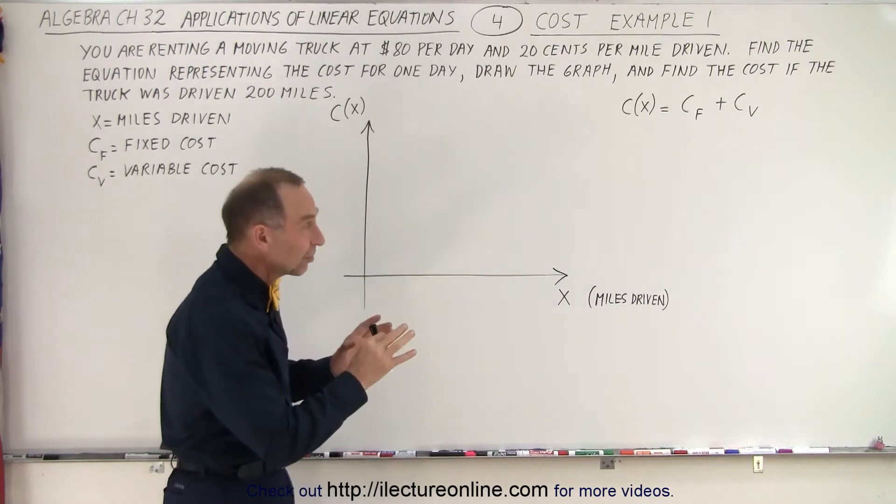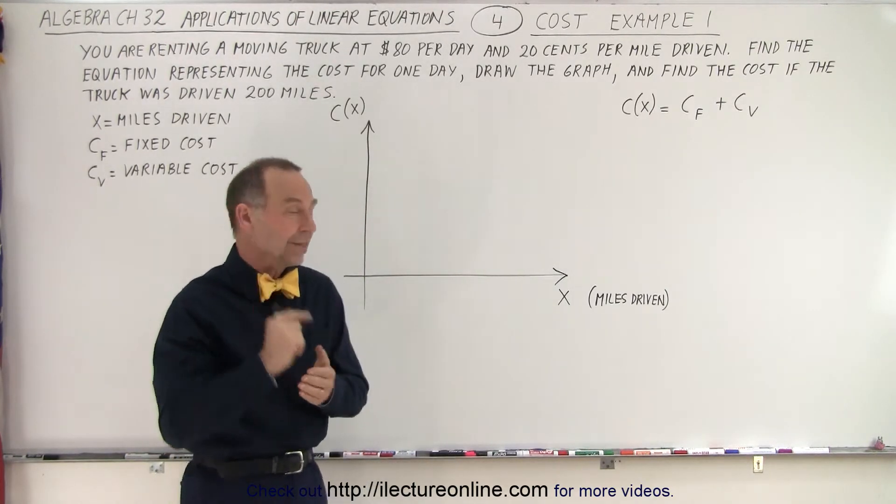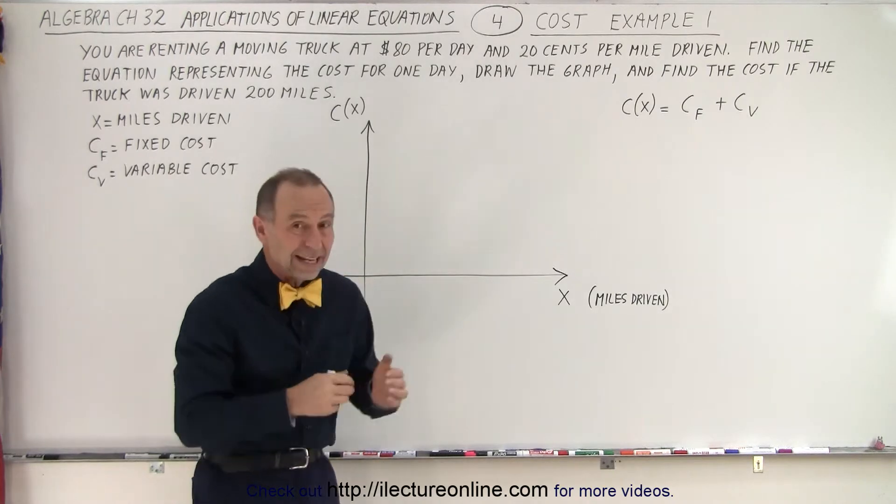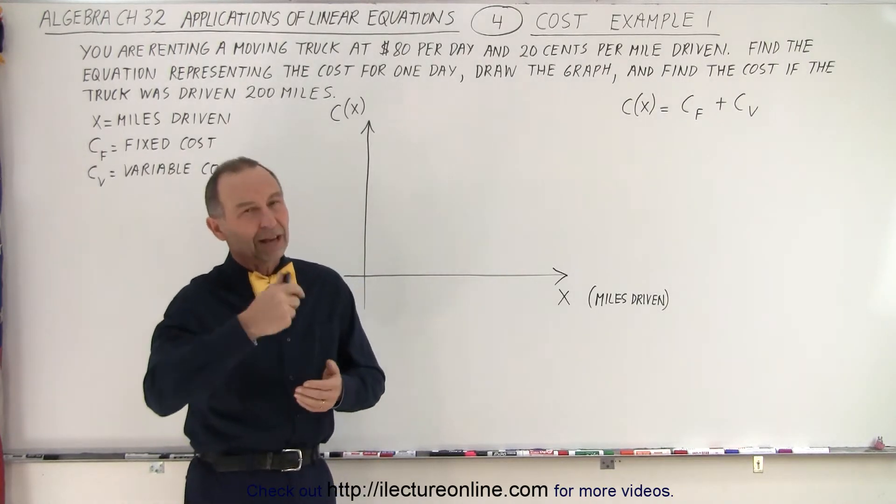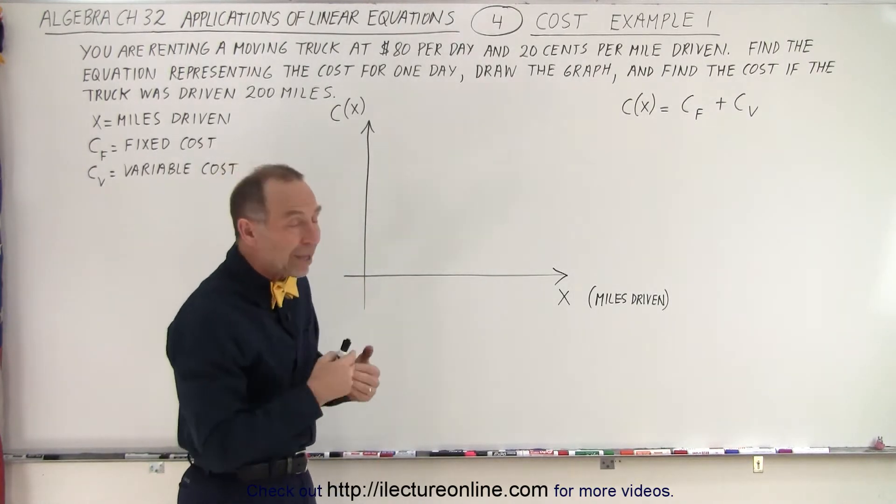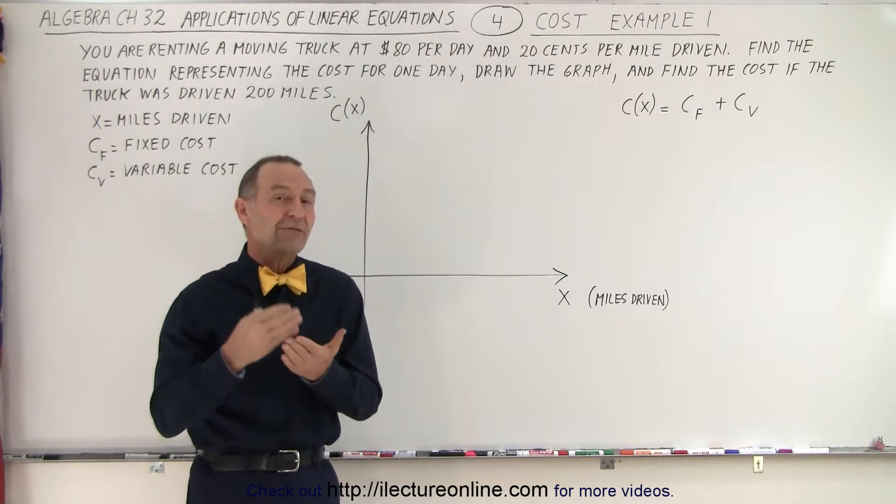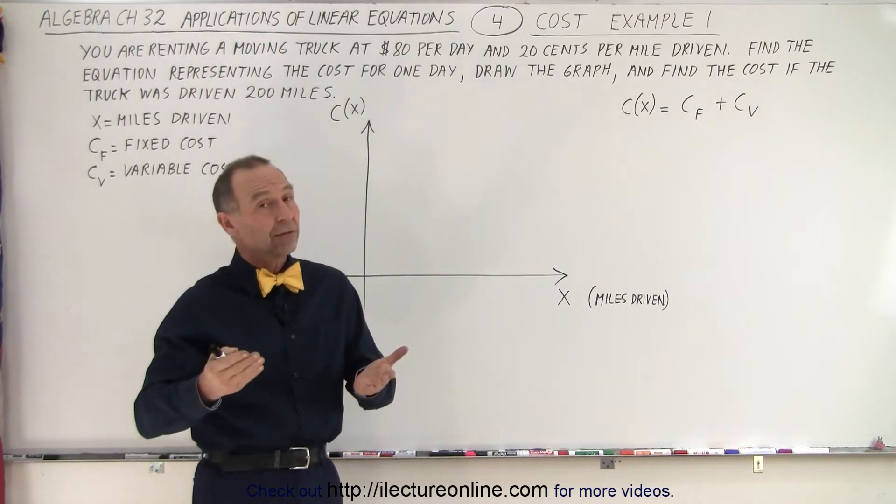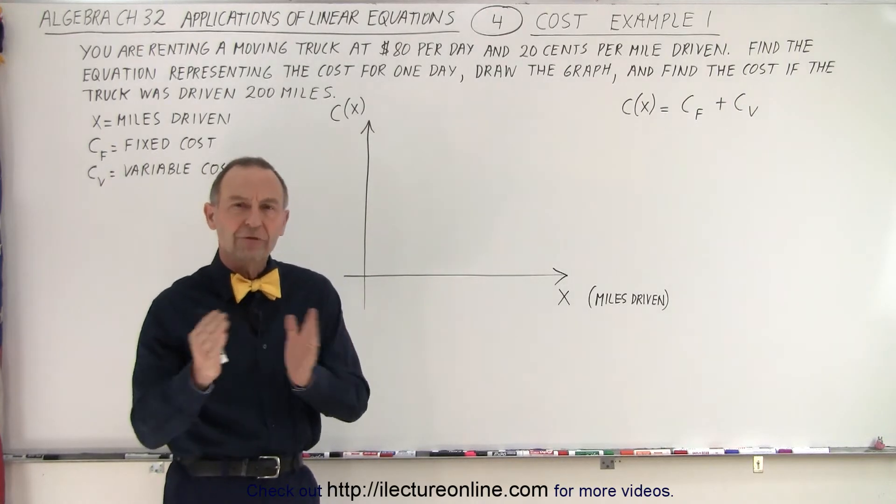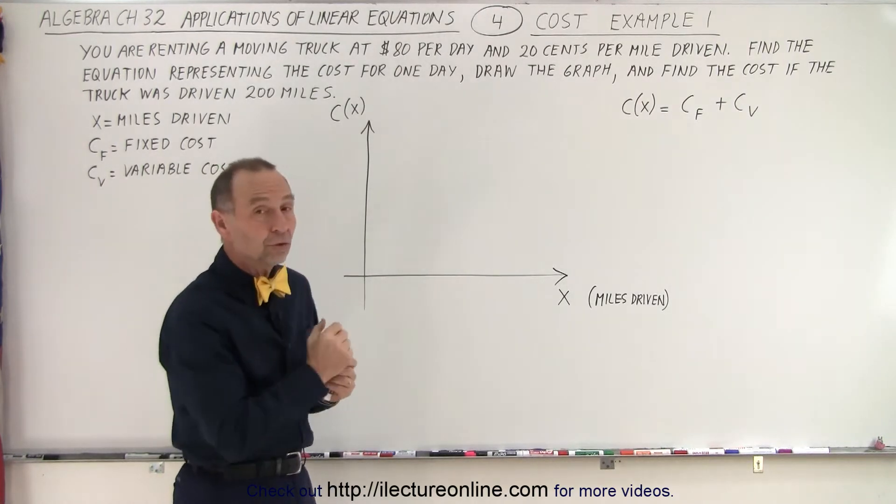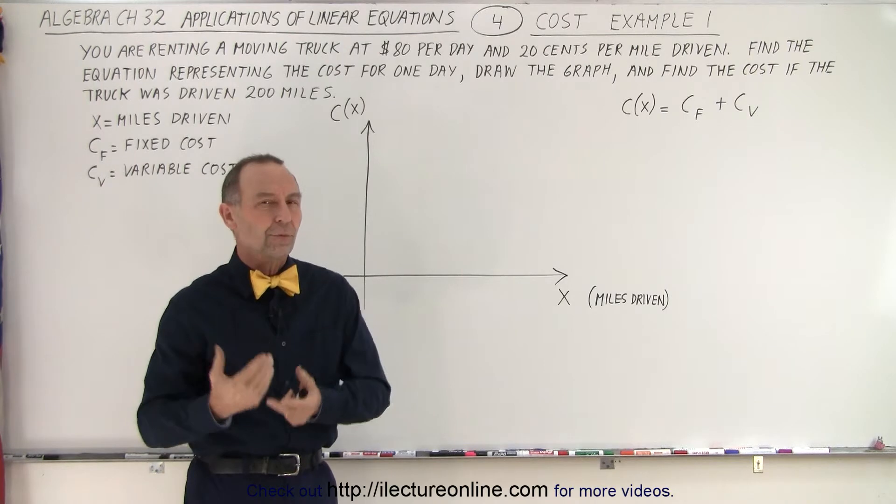So here you can see that the fixed cost is the cost you pay for the truck for one day, which is $80. And even if you don't drive the truck, you still have to pay $80. Then we have the variable cost, the cost you have to pay for each mile driven. So the more miles you drive, the more you have to pay. That's the variable cost. The sum of those two gives us the total cost of renting the truck.